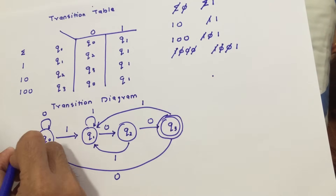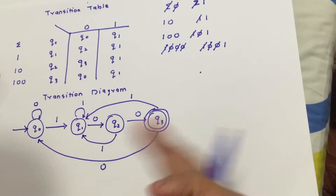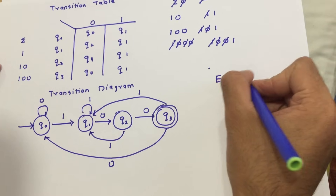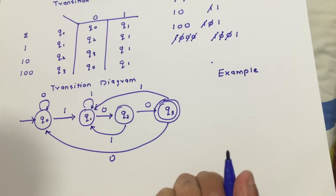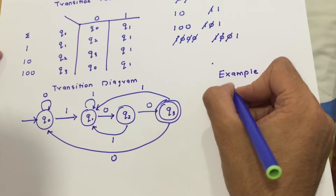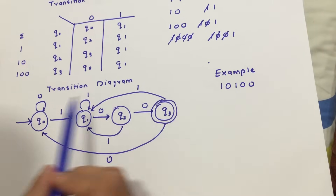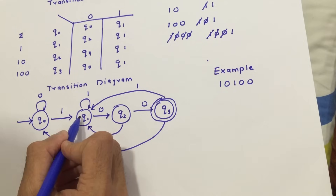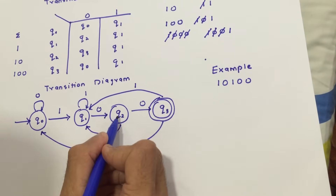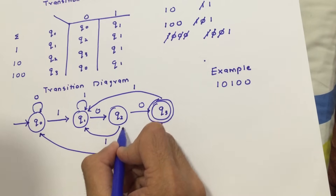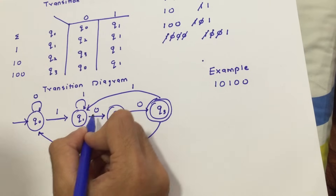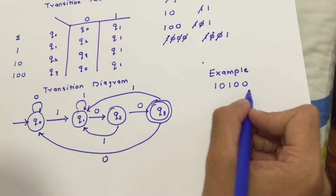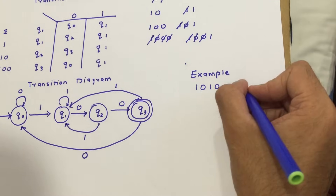q3 is our final state and q0 is our initial state. Let's verify with an example: consider the string '10100', which ends with '100'. Starting at q0 — on 1 go to q1, on 0 go to q2, on 1 go to q1, on 0 go to q2, on 0 go to q3. The string ends at q3, which is the final state, so it is accepted.